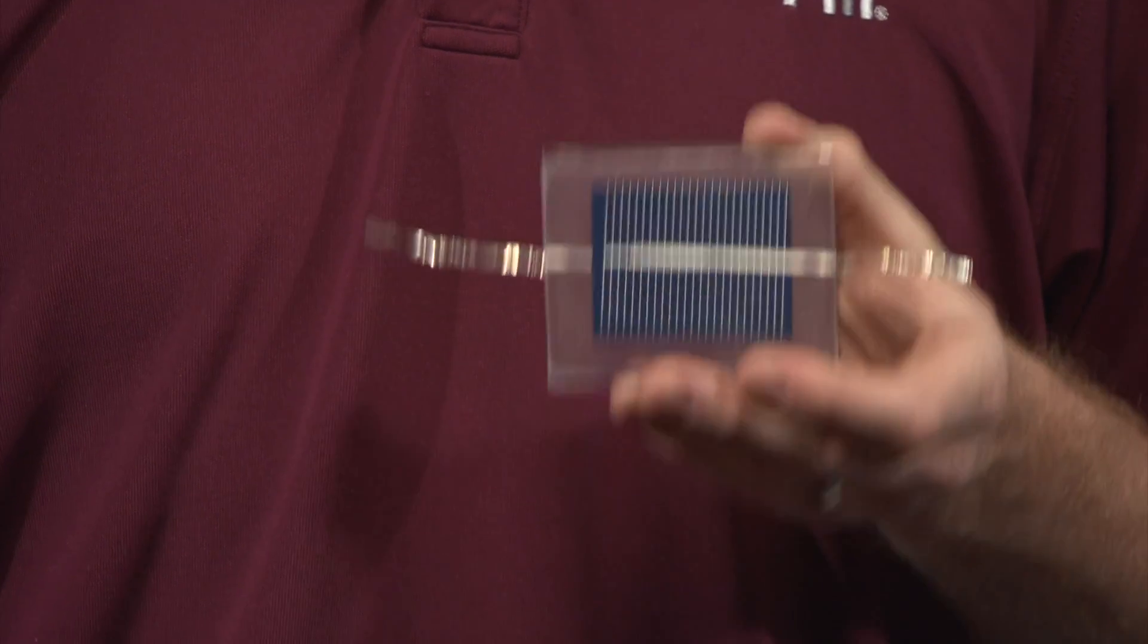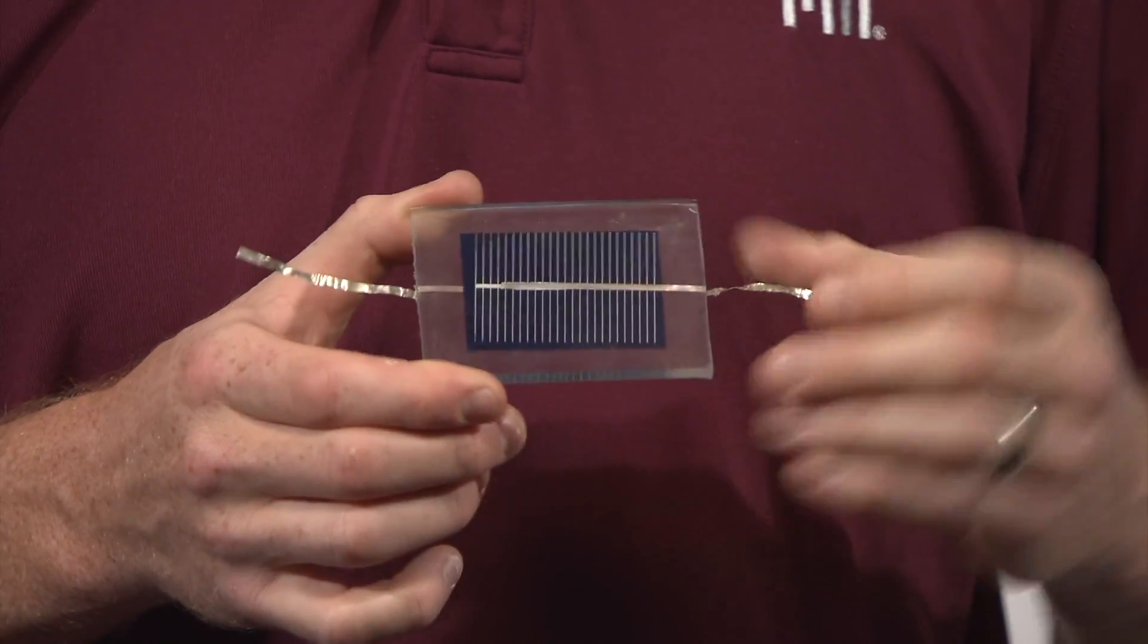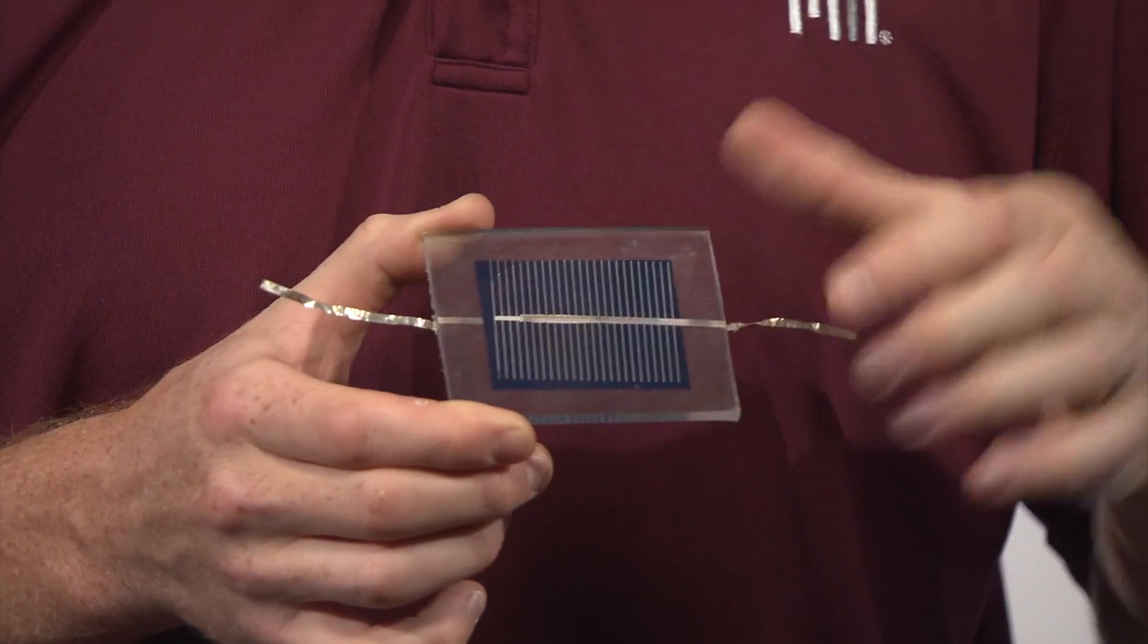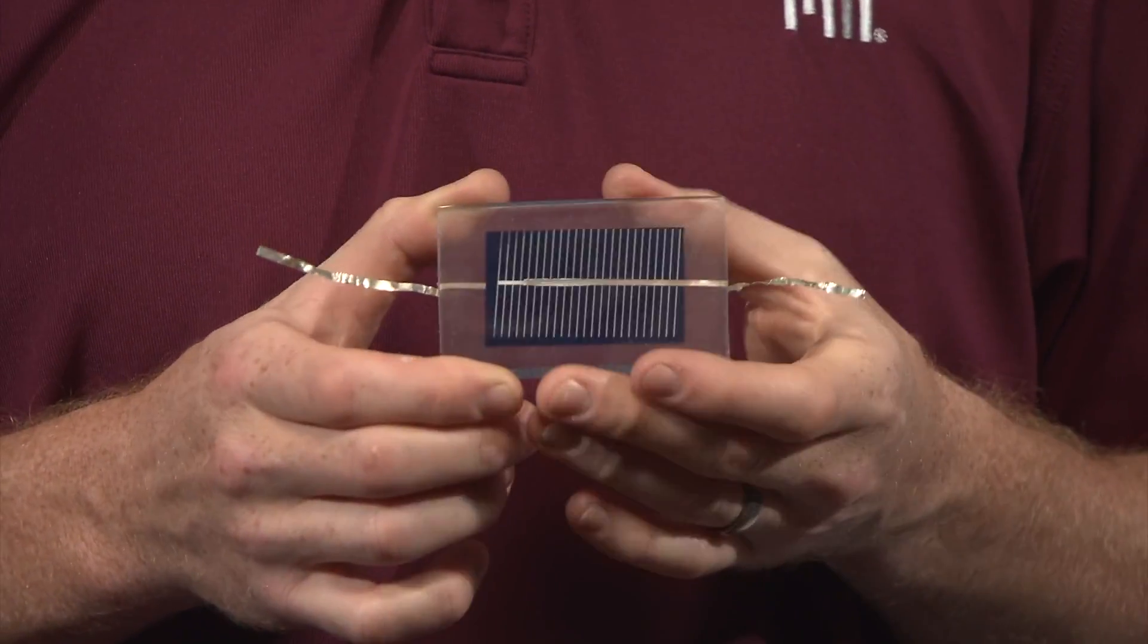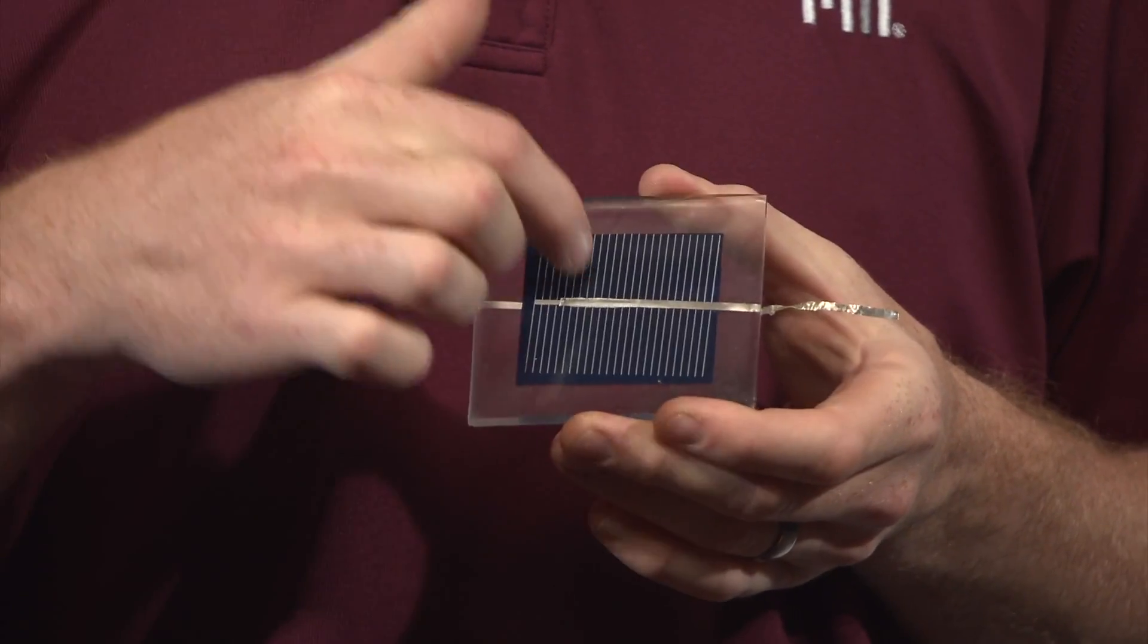First, let's go over the structure of a solar cell. Here's a cell that I made, and we can see that a metal ribbon is connected to the top metal contacts which form a grid. The spaces between the grid lines allow light to enter the cell.